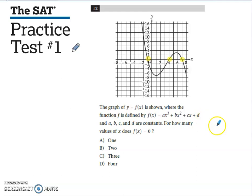A, B, C, and D are constants that they don't give us the value of, and we're asked to try to decide how many values of x does f of x equals zero.